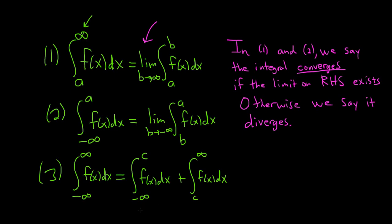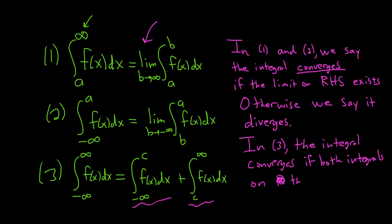The third one will converge only if both integrals converge. So in three, the integral converges if both integrals on the right-hand side converge. So they both have to converge. If one of them diverges, game over. The whole thing diverges. Both integrals on the right-hand side must converge in order for us to have convergence here.